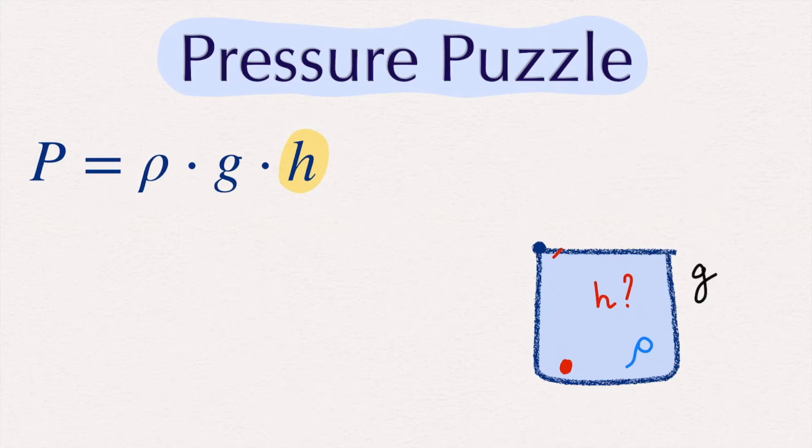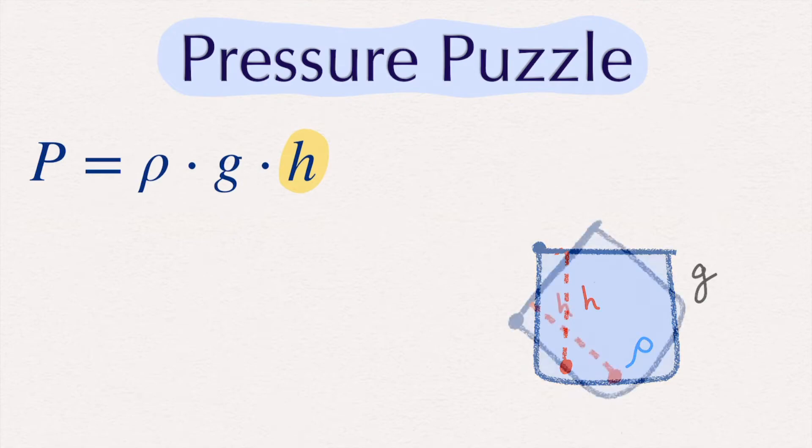It stands to reason to take the lid of the container, since it takes the place where the surface was before we closed it. But, if we then tilt the container, the distance to the lid does not seem to be a reasonable distance for h anymore.